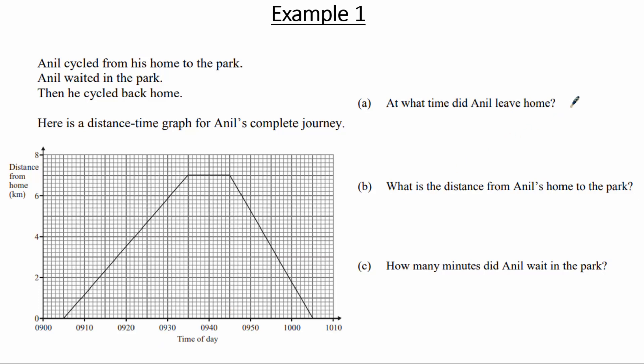In part A, at what time did Anil leave home? To answer this we come to the distance time graph and note that Anil's journey starts at a point between 0900 and 0910, so this point is 0905. Therefore Anil left home at 0905.